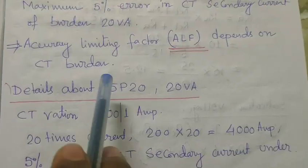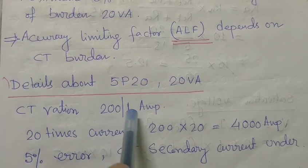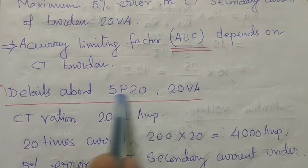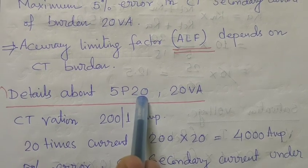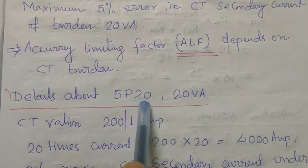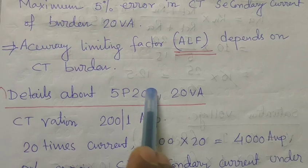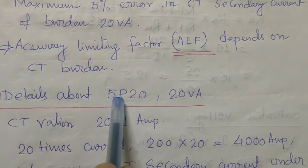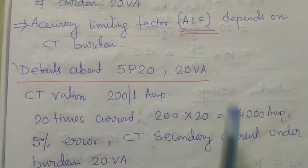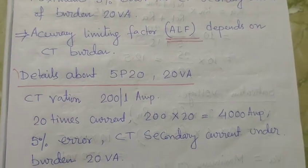Now discussing 5P20 with a 20 VA burden, also taking a CT ratio of 200/1 ampere. The meaning is that 20 times the rated current can flow to the primary of the CT during fault conditions. Under this fault condition, a ±5% composite error of the secondary current is permitted under the burden of 20 VA. That is the meaning of 5P20.